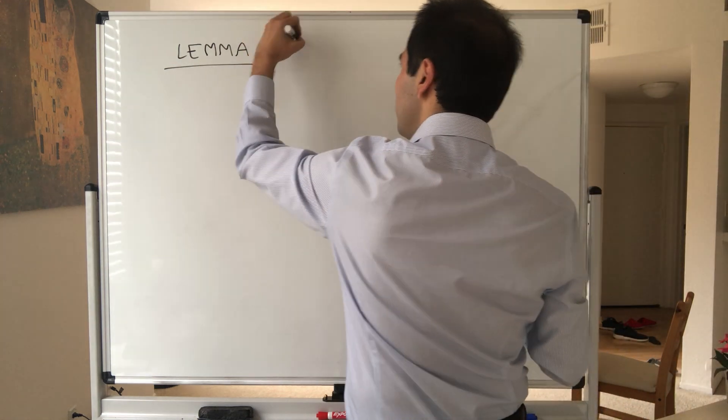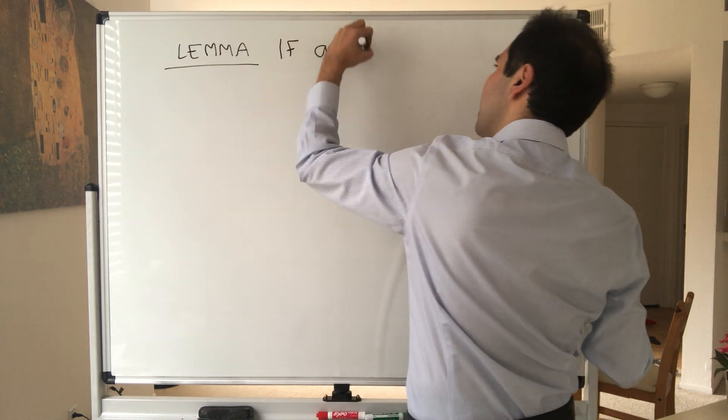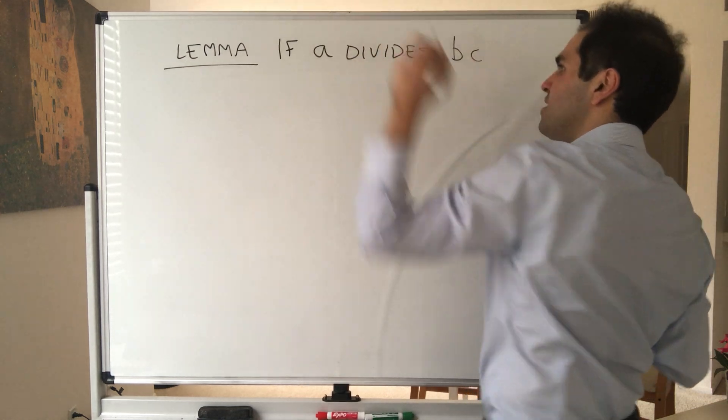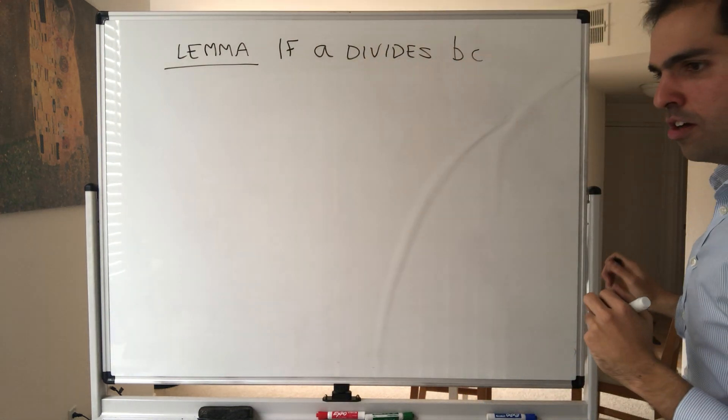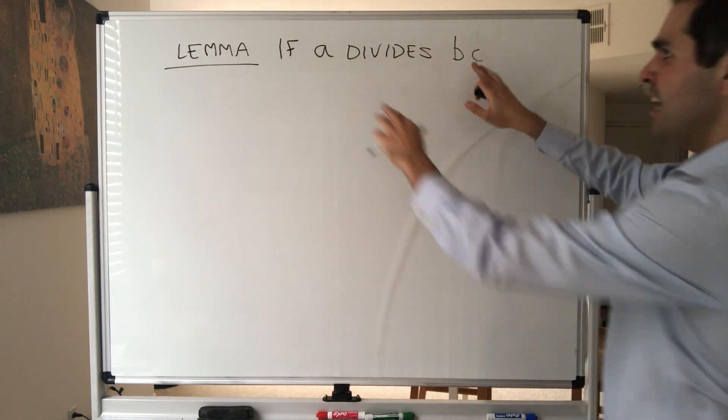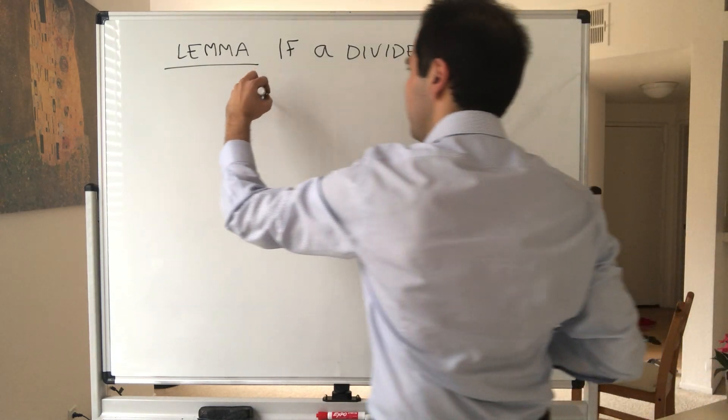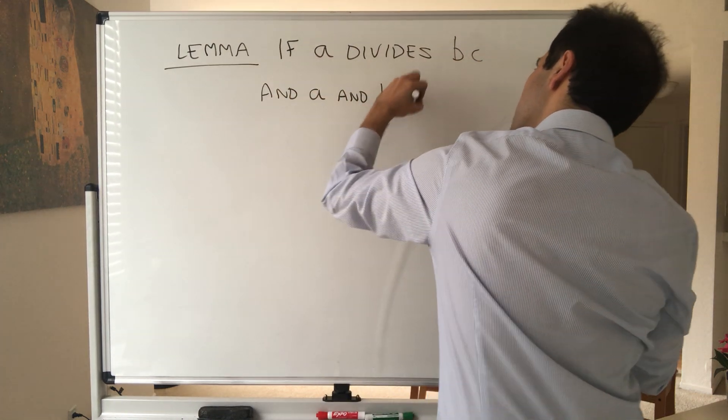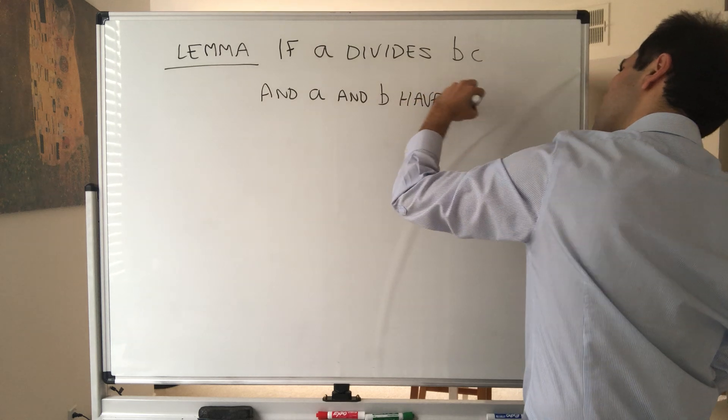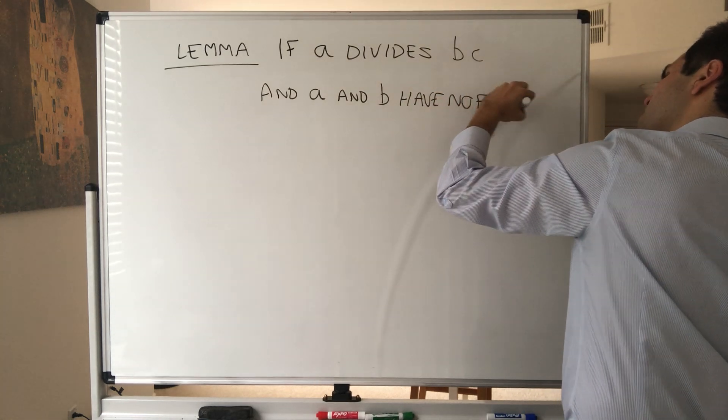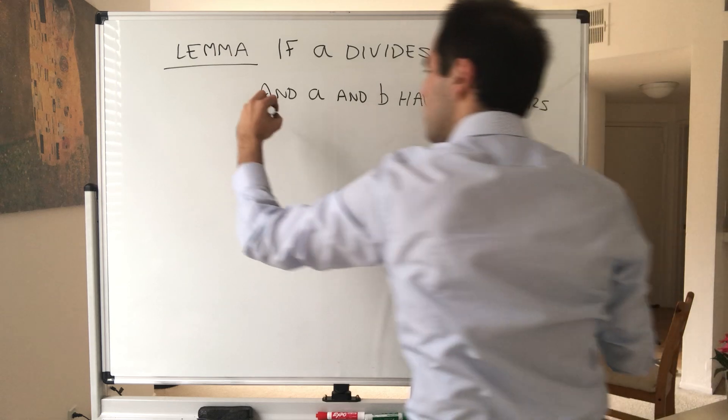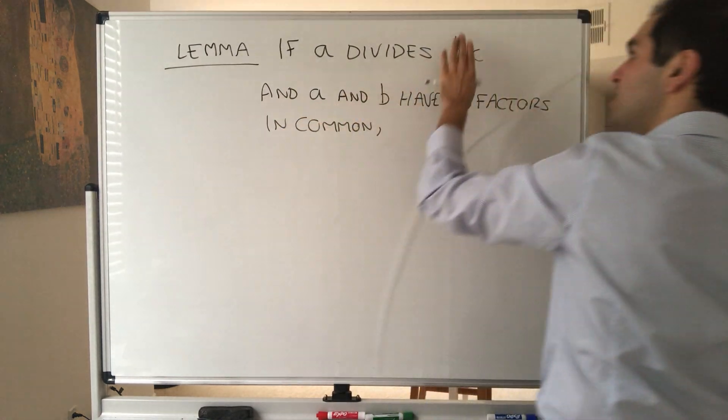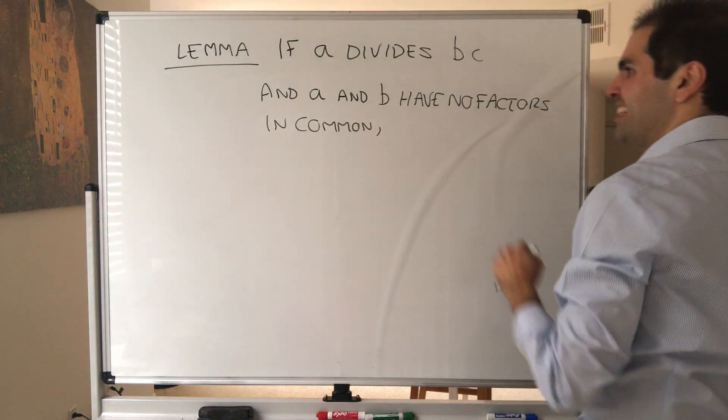Namely, if a number A divides BC—so A, B, C they're all numbers—and A and B have no factors in common, then it turns out A has to divide C.